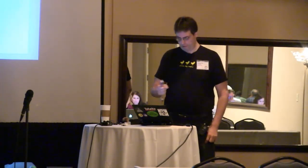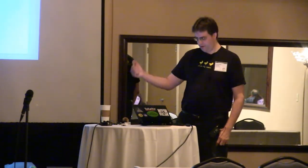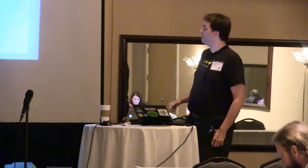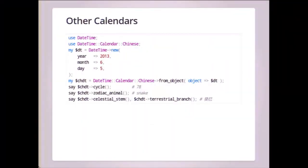There are also modules for other calendars and we can convert between them. For example, we could make a DateTime object for the current date, then create a Chinese calendar object from that DateTime object and ask it for information about the Chinese calendar — what cycle is it, what's the zodiac animal currently, what's the celestial stem and the terrestrial branch. These are questions you're all burning to have answered, but the output is in Chinese characters I can't read.